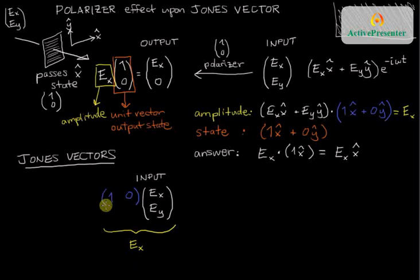Now, what's the other part of what the polarizer does? It doesn't just figure out how much Ex there is. It then assigns that amplitude to a unit vector 1, 0. So, let's go ahead and write the other half of what this thing mathematically does. So, now I have the amplitude Ex multiplying by 1, 0.